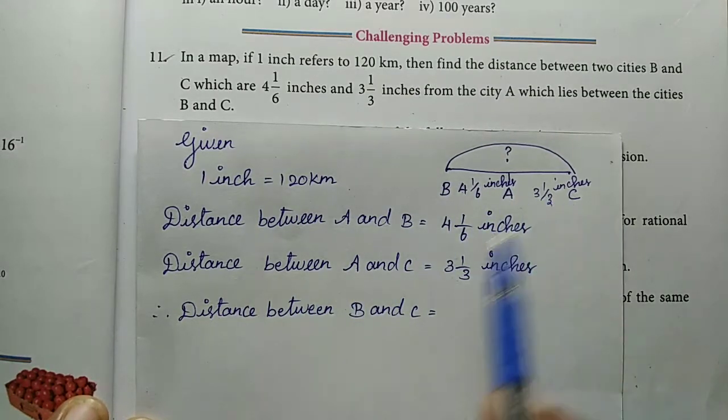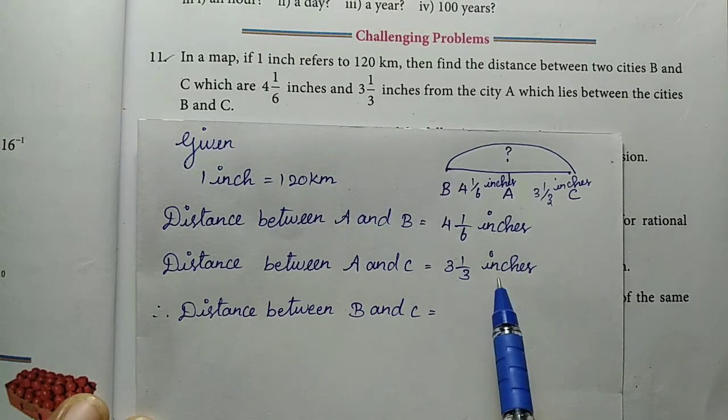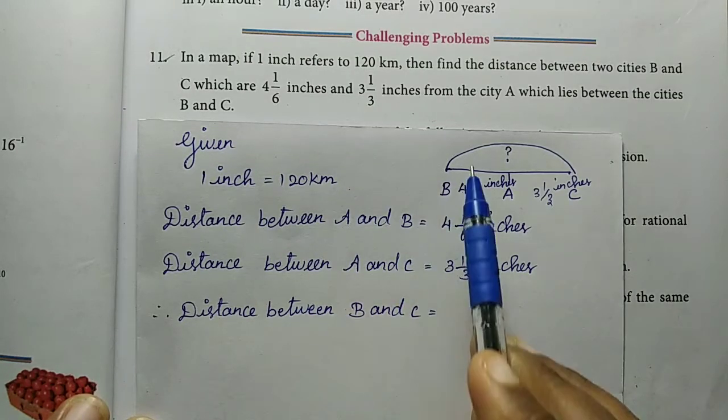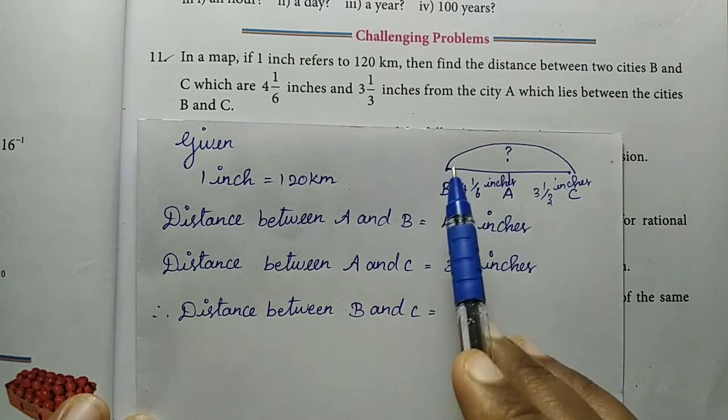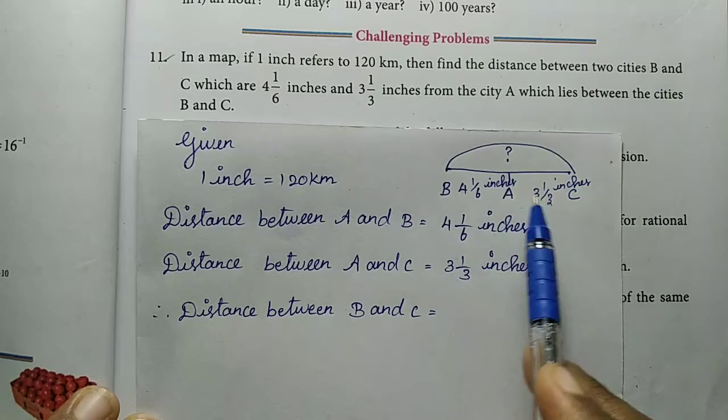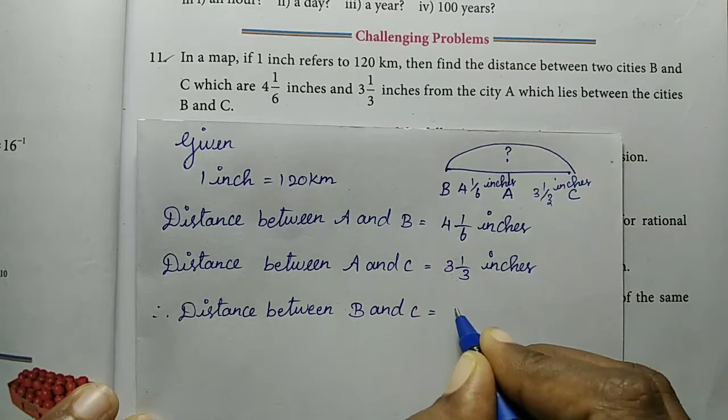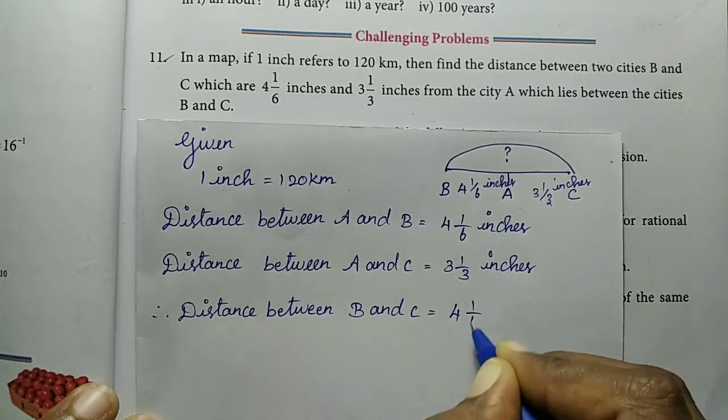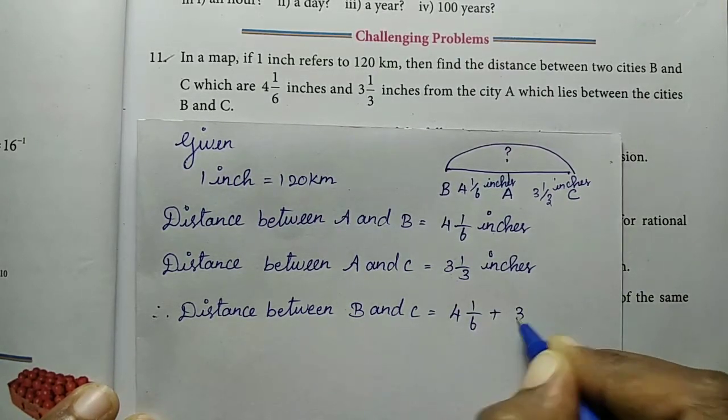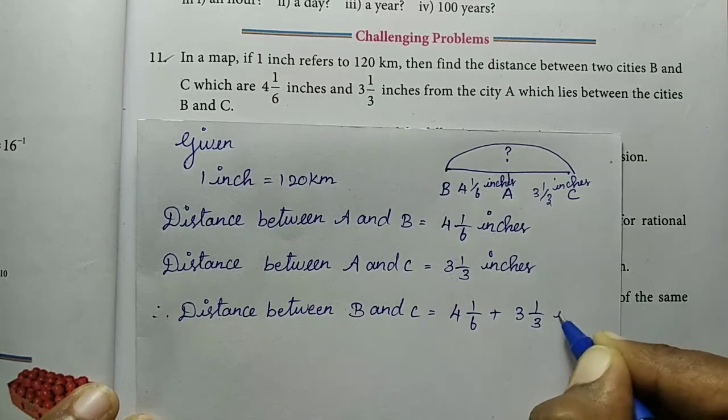Distance C is 3 1/3 inches. To find the distance between B and C, we need to add these two values together. So we add 4 1/6 plus 3 1/3 inches.